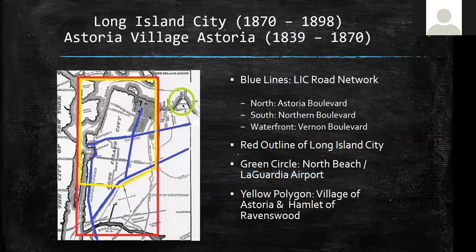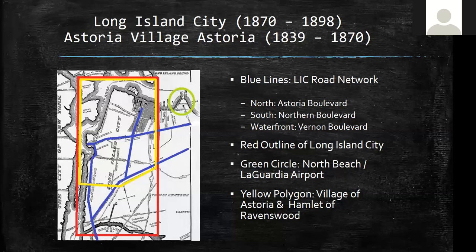Long Island City — what is Long Island City? What is Astoria Village? Astoria Village started before Long Island City, from 1839 to 1870. It's the area around Hallett's Cove, shown in yellow on this map. The red area — basically everything from 51st Street to the East River, from Newtown Creek to Hell Gate — is the boundary of Long Island City. The main roads are Vernon along the waterfront, Northern Boulevard, Astoria Boulevard going to Flushing, Steinway Street going towards the airport. The green area is where North Beach is today — that's LaGuardia Airport.